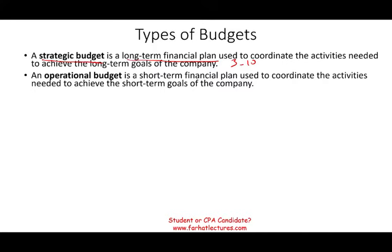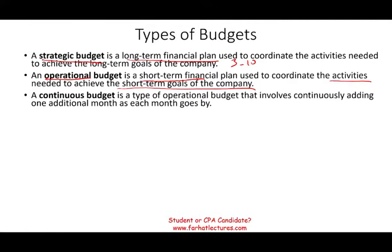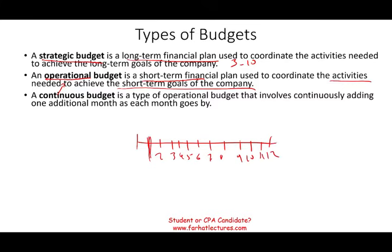We also have the continuous budget, which is a type of operational budget. Basically, you plan for 12 months, and once you finish one month, you add another month at the end, so you always have a rolling 12-month budget. That's called the continuous budget.